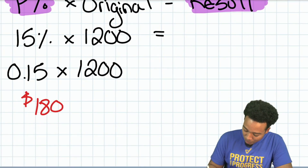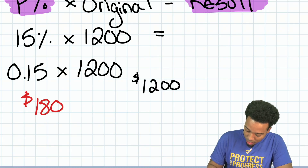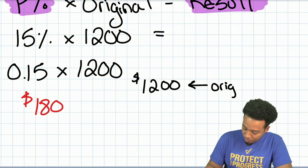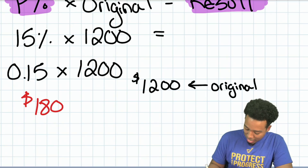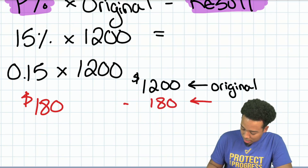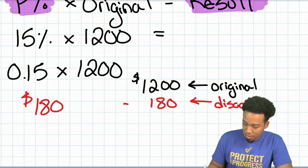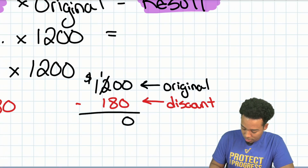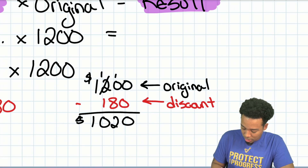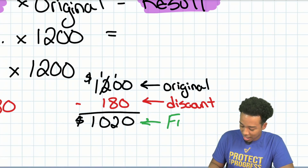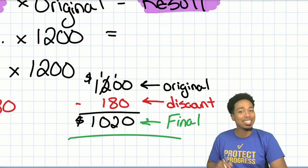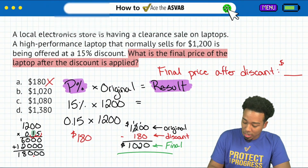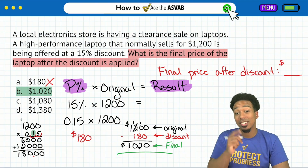We are looking for the final price after the discount. So what we need to do is take that $180 and subtract it from the $1,200. Here's our original price minus the $180 discount. When we subtract: 1,200 minus 180 gives us $1,020. That is our final price after we apply the discount, which is why B is the correct answer.